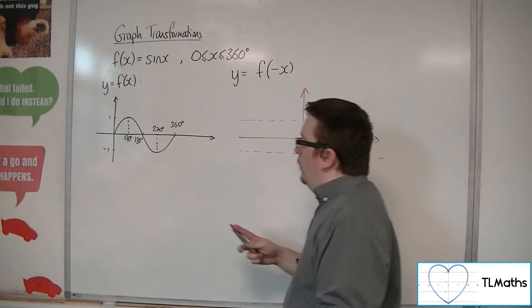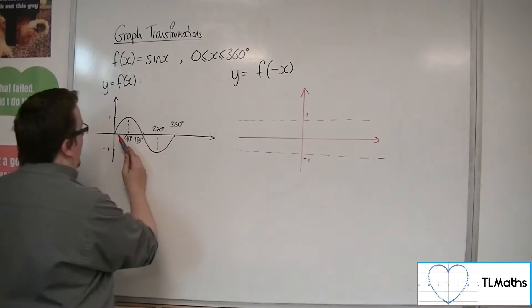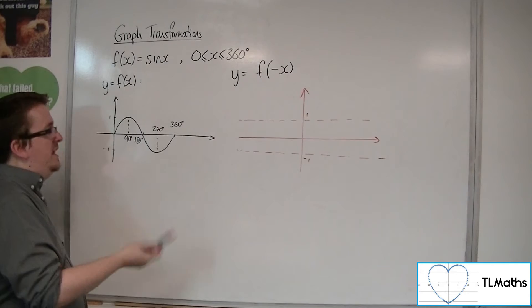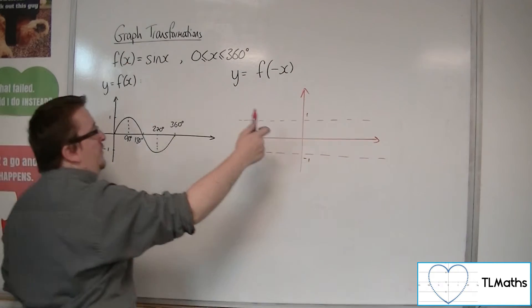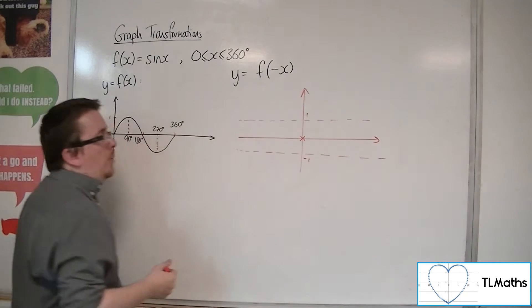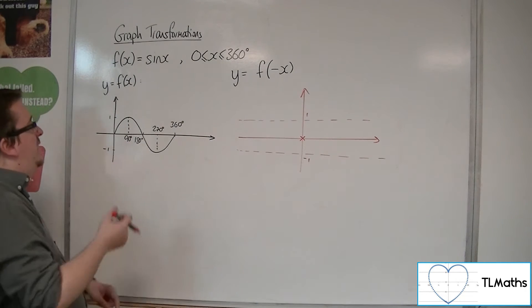OK, so starting off with 0, 0, when x is 0, f of 0 is 0. So when x is 0, this is still f of 0, and so we're still at the origin. So that point hasn't moved. That stayed fixed.